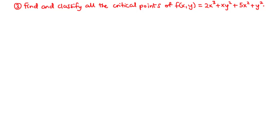We move on to example 3 and we want to find and classify all the critical points of this function. As usual, to find the critical point, we are going to find the first order partial derivative of the function with respect to x and then y, and then we set both of them to 0.